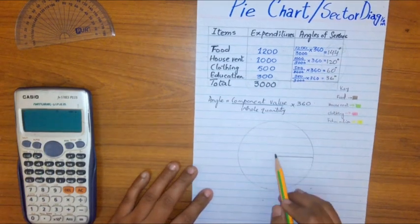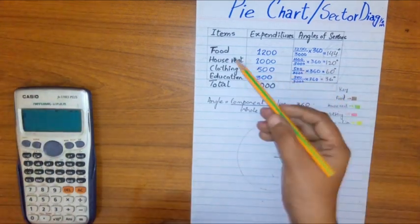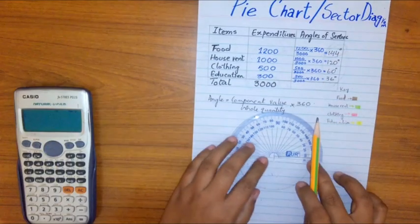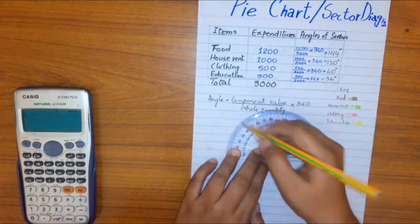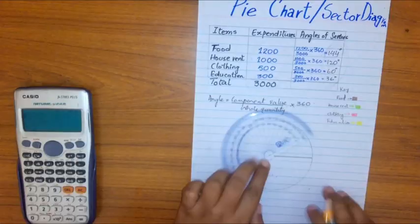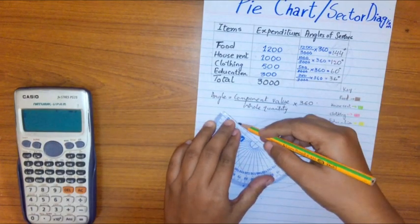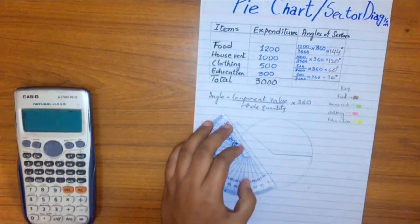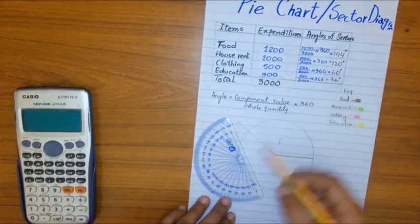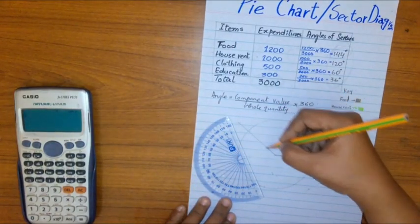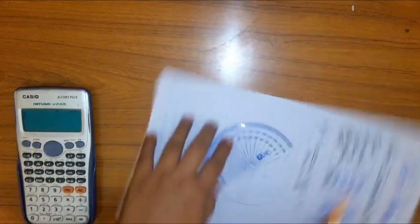Now we are going to draw all these angles here. First of all for food, I am going to draw an angle of 144 degrees which is somewhere here. Now for another angle we use this line as our base. Next angle is of 120 degrees for house rent.